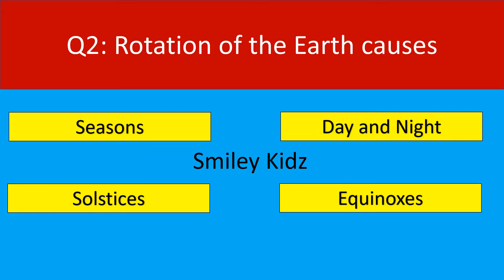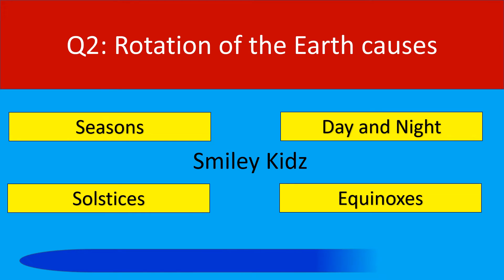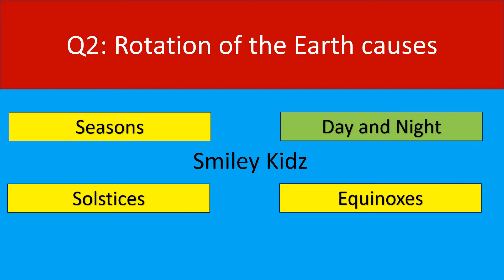Question number 2. Rotation of the earth causes. Your options are seasons, day and night, solstices, equinoxes. Your time starts now. Your time is up. The correct answer is day and night. Rotation of the earth causes day and night.